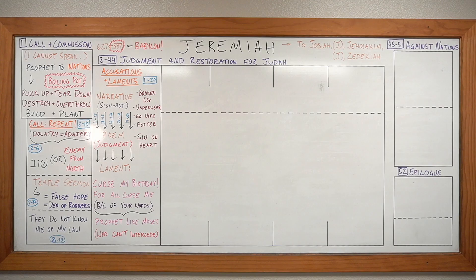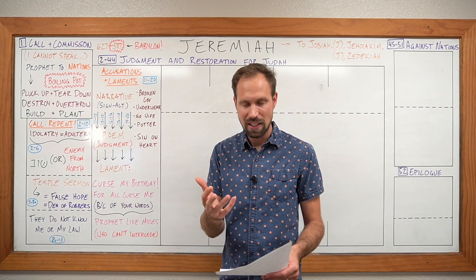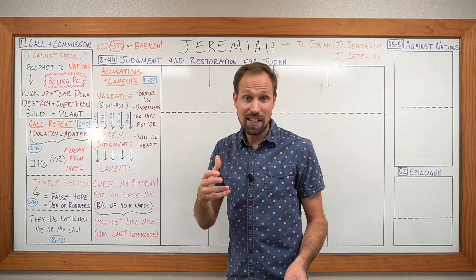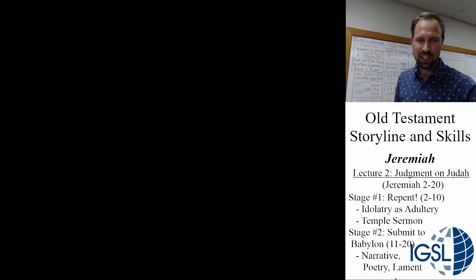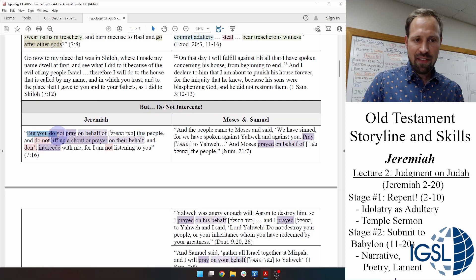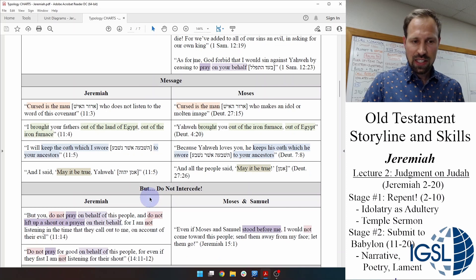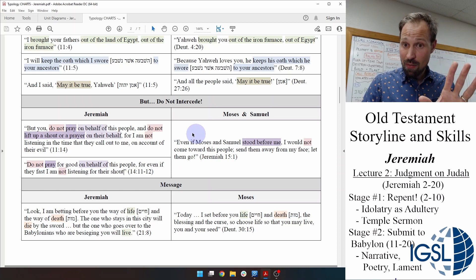But the one key glaring difference between Moses and Jeremiah is that Moses acted as an intercessor — interceding on behalf of his sinful nation to Yahweh. God forbids Jeremiah from acting as an intercessor: 'You shall not pray for this people.' Chapter 11: 'Do not pray on behalf of this people.' Chapter 14: 'Do not pray for good on behalf of this people, for I am not listening to their shout.' Moses interceded for the people, and so did Samuel, but not Jeremiah.